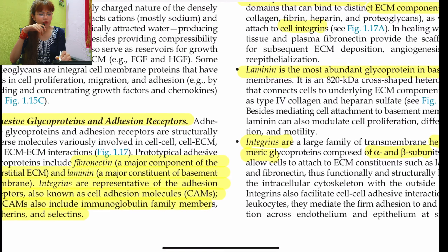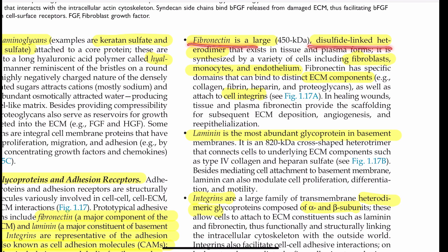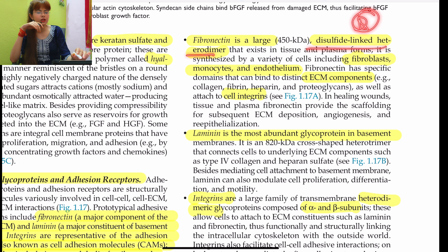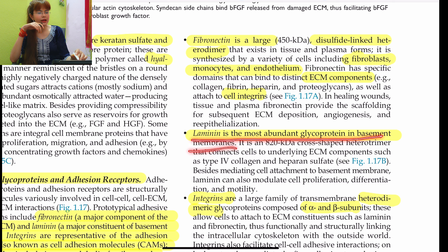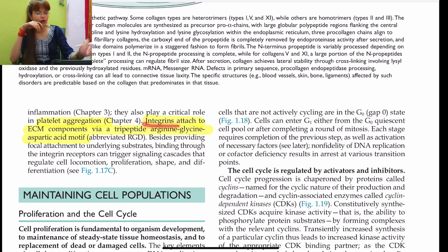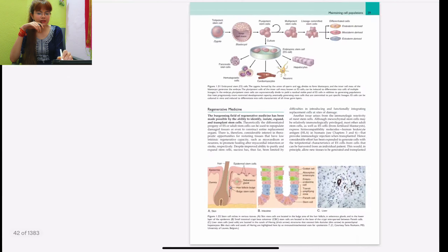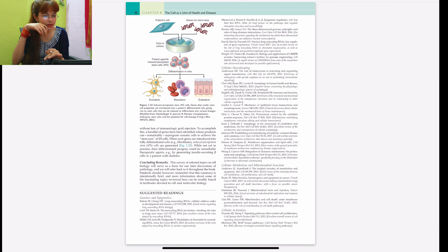Proteoglycans and hyaluronic acid are glycosaminoglycans — examples include keratan sulfate and chondroitin sulfate. Adhesive glycoproteins include fibronectin, a major component of interstitial ECM, which is a disulfide-linked heterodimer synthesized by fibroblasts, monocytes, and endothelium. Laminin is the most abundant glycoprotein in the basement membrane. Integrins are heterodimers composed of alpha and beta subunits that attach to ECM components via a tripeptide arginine-glycine-aspartic acid (RGD) motif.